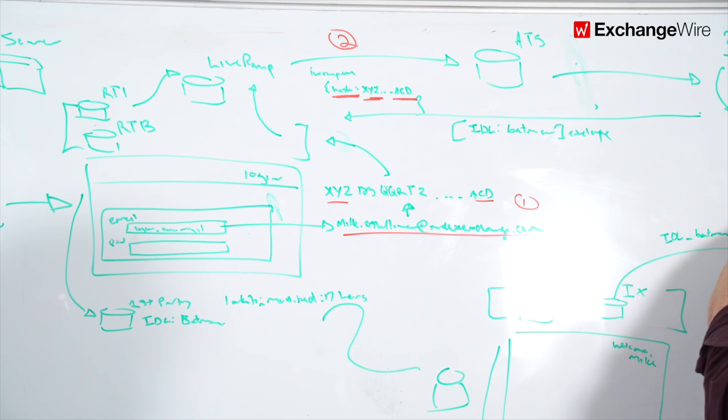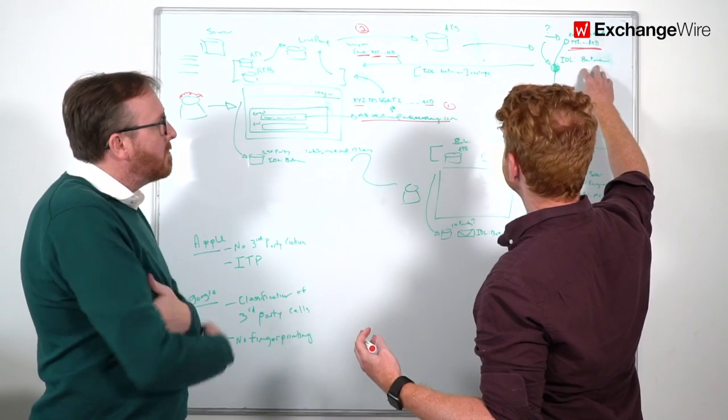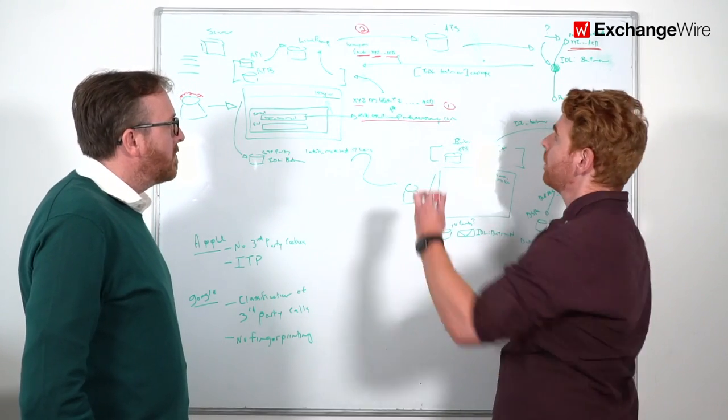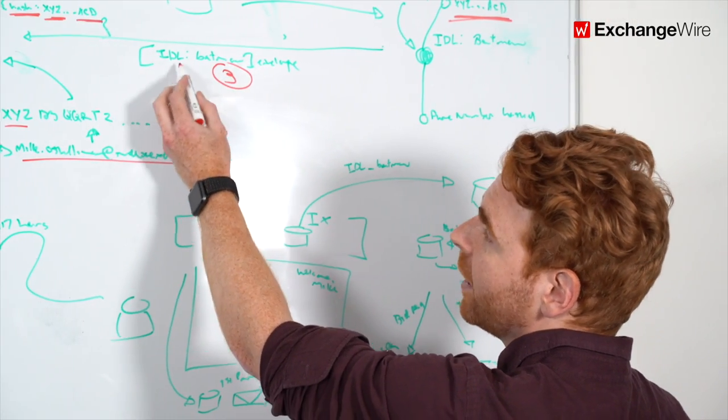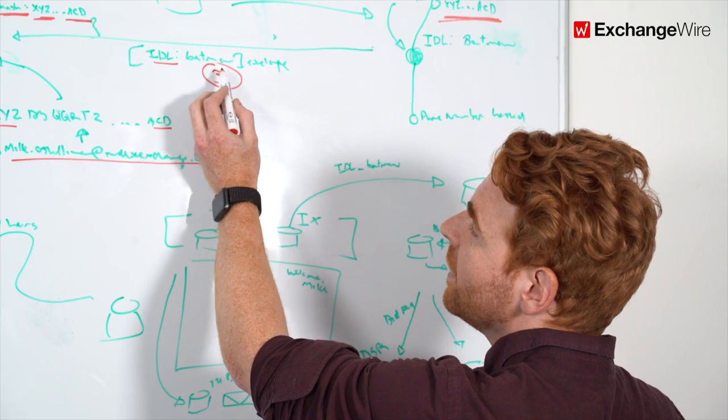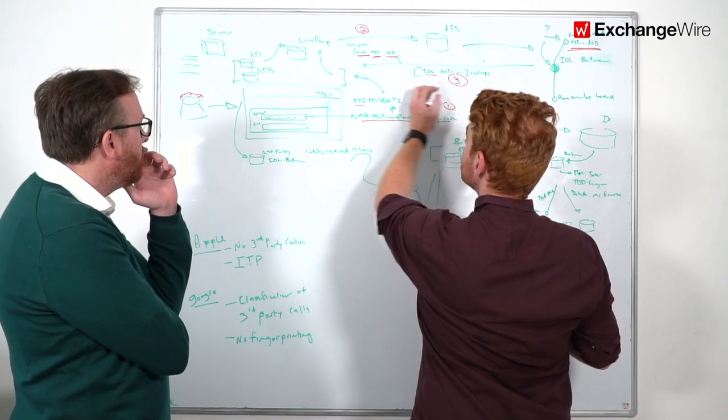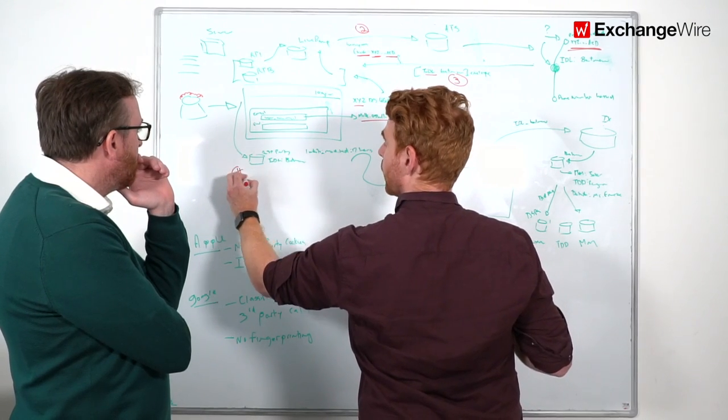And LiveRamp looks up in their graph, hey, is there a user here with an email hash that starts XYZ, ACD? And they're like, actually, we do. And LiveRamp's people-based identifier is called identity link. And so what LiveRamp does is they return this identity link in a form that's heavily encrypted. And what that's referred to as an encrypted envelope. So what happens next is LiveRamp right here returns this envelope of the identity link or IDL. And you can see this identity link envelope is called Batman.